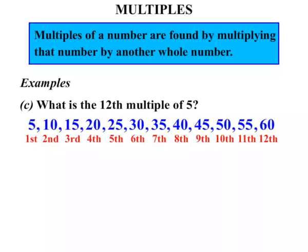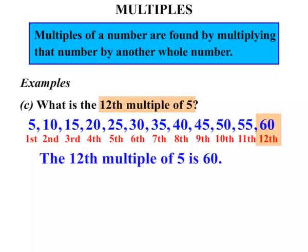twelfth. So the twelfth multiple of 5 we can see is going to be 60. That's the long way of doing things. What about the short way? The twelfth multiple of five, all we need to think about is 12 times 5, and 12 times 5 of course is equal to 60. So that's the quick way of doing things.